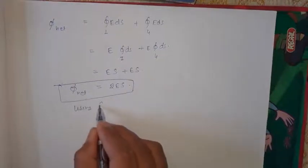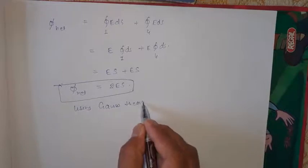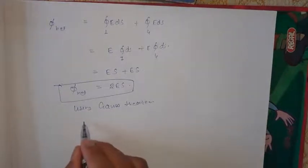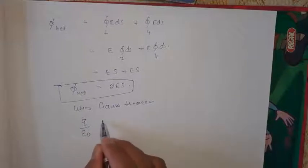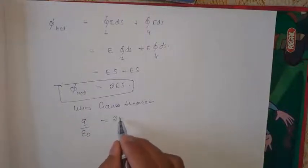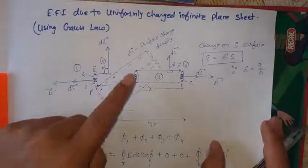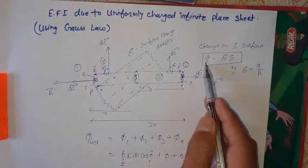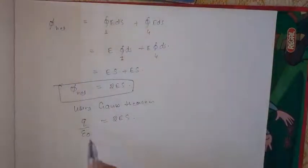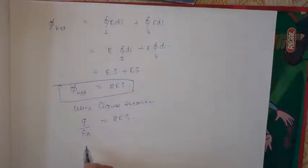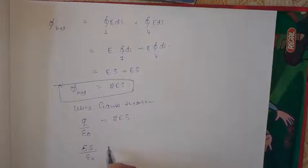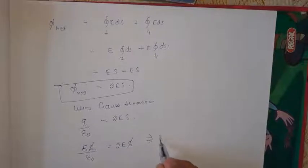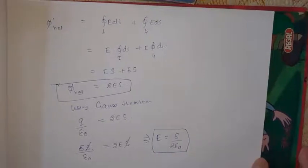Now, applying Gauss's theorem: the net flux equals the net charge enclosed in the Gaussian surface divided by epsilon-naught. The net flux is 2ES, and the enclosed charge Q is Sigma times S. So we have Sigma·S divided by epsilon-naught equals 2ES. The S cancels from both sides.